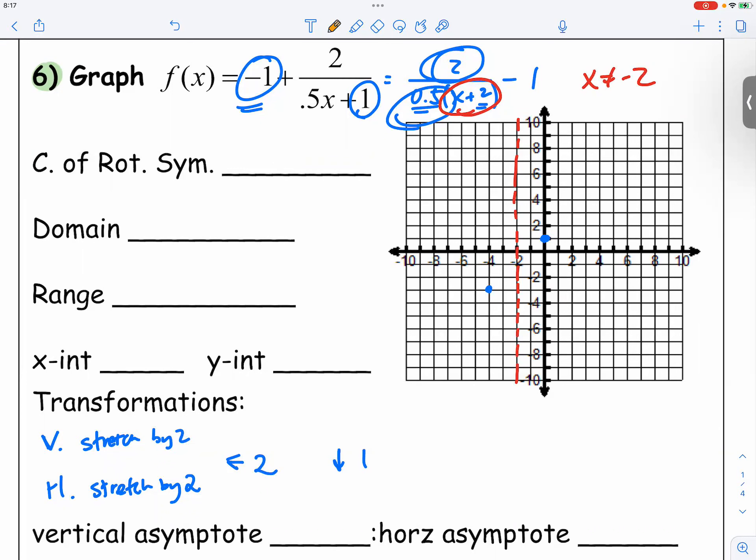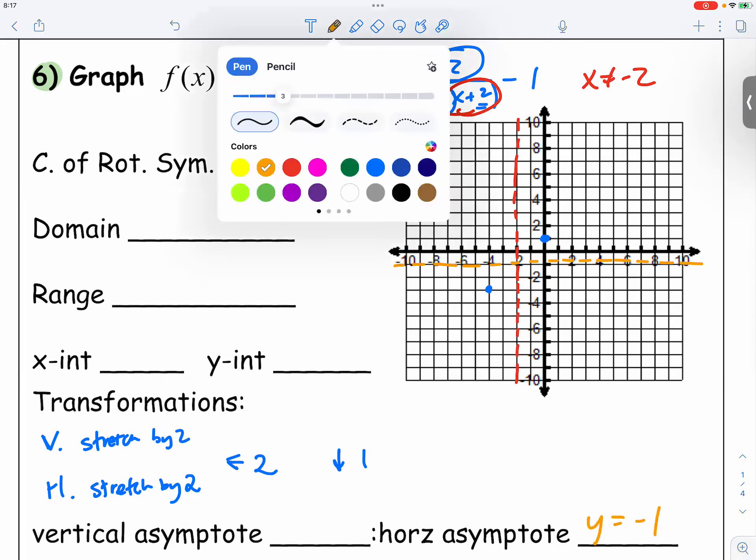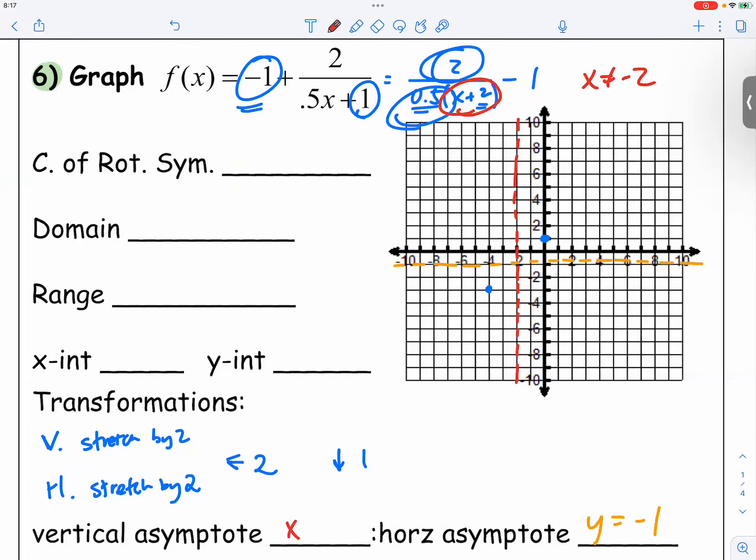And then the horizontal asymptote is shifted down by 1 unit. So y is equal to negative 1 for the horizontal asymptote.